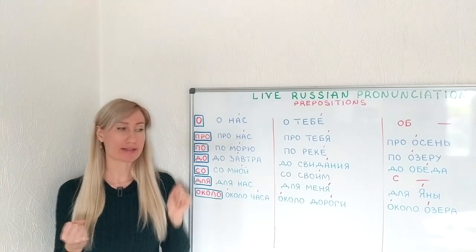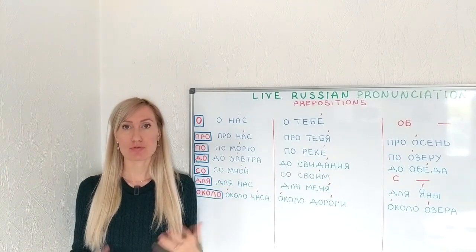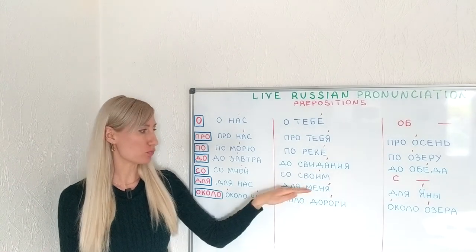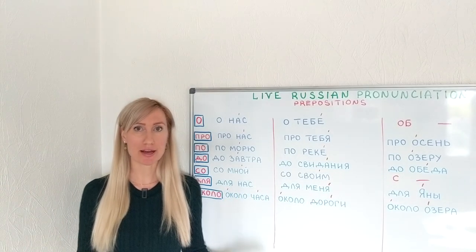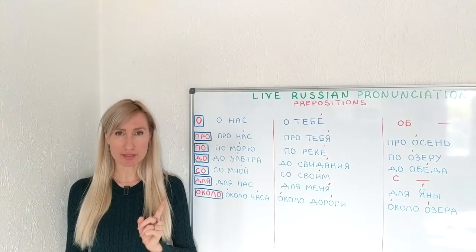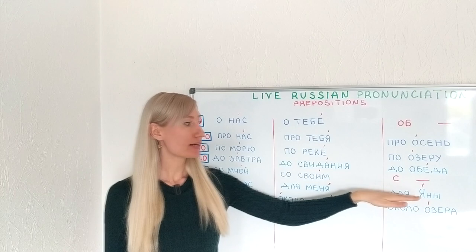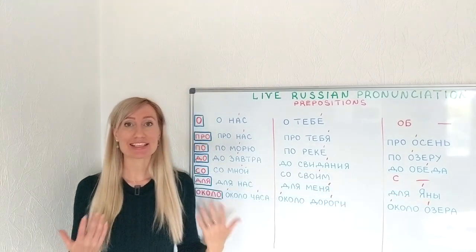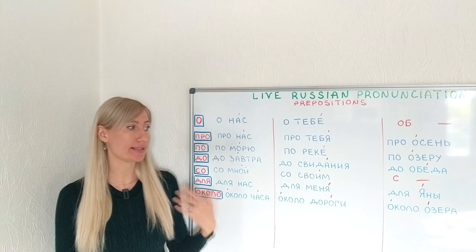Now we are getting to ДЛЯ, which means 'for.' Interestingly, it sounds differently depending on the stress. ДЛЯ НАС — for us — it still sounds like ДЛЯ. But further from stress: ДЛЯ МЕНЯ — for me — it sounds like ДЛЬ, because unstressed Я sounds like И. If a word starts with Я: ДЛЯ ЯНЫ — for Yana — it's like a double Я.